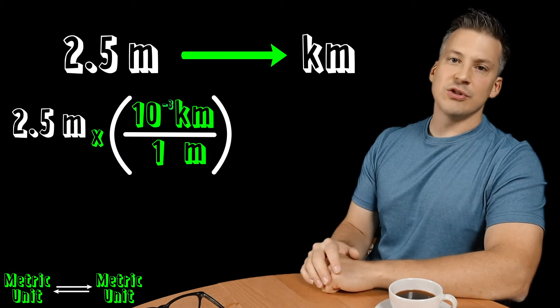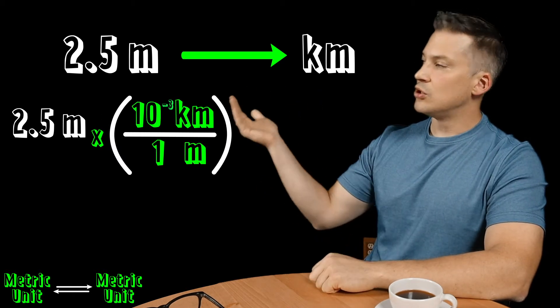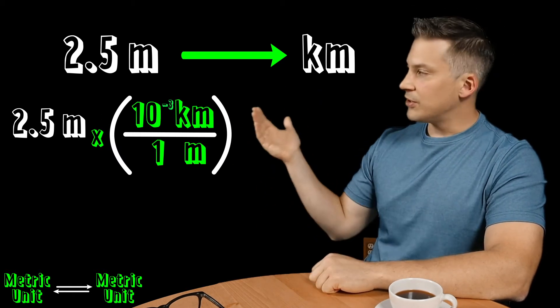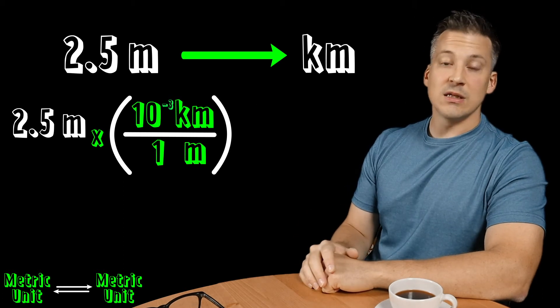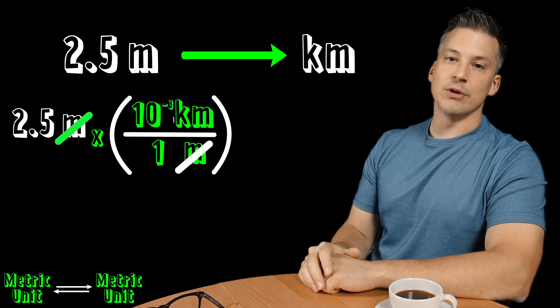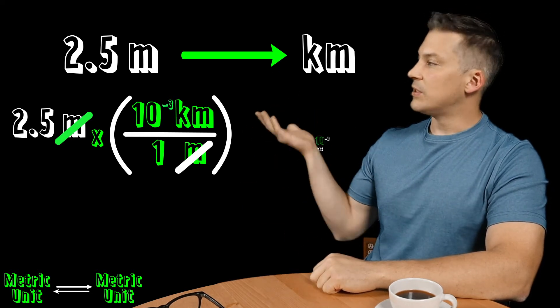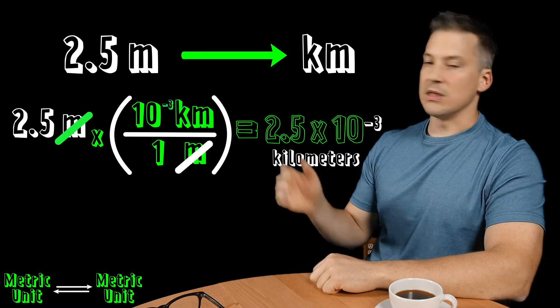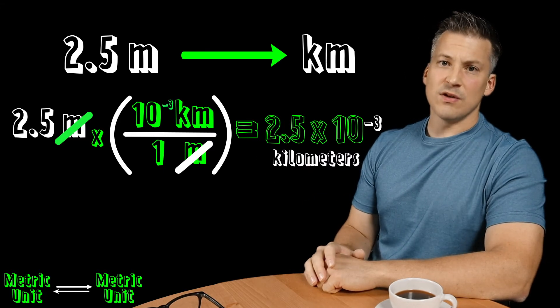So now all we have to do is multiply this across. So it's really 2.5 multiplied then by 10 to the minus three. Notice the meters cancel and we're left with that unit of kilometer. And what is our answer? Well, there it is. You can leave it in terms of scientific notation, 2.5 times 10 to the minus three kilometers.